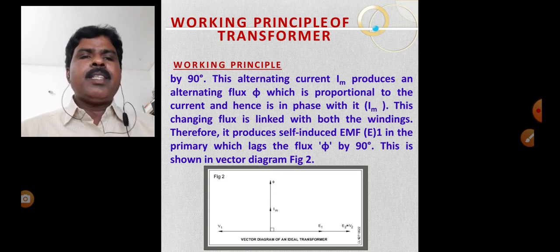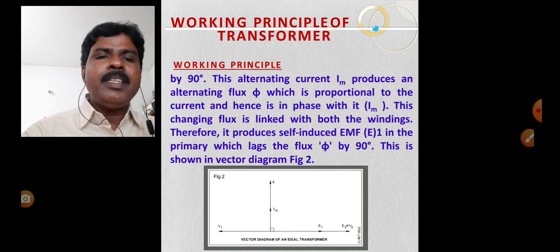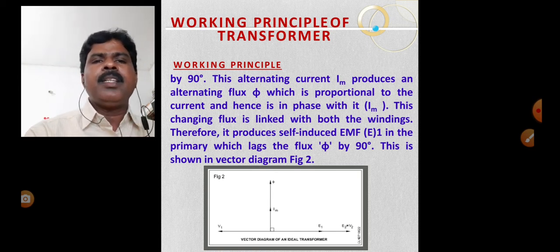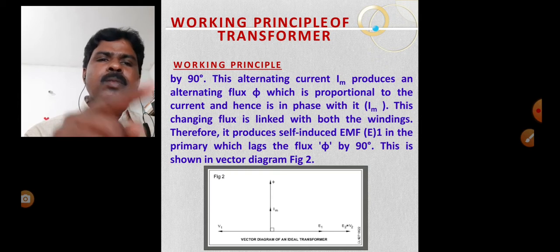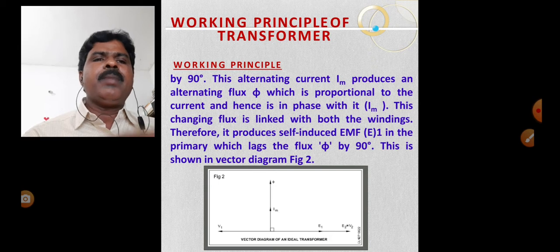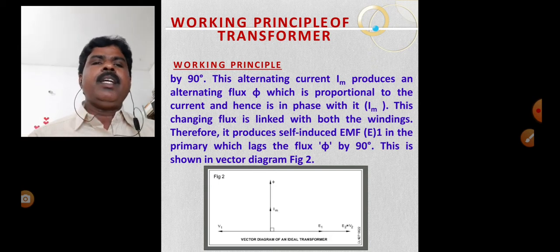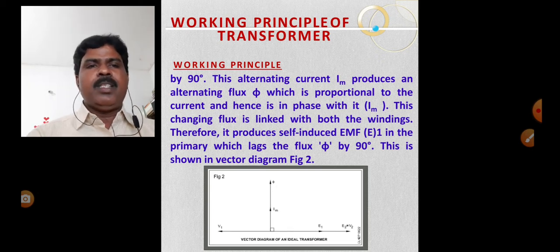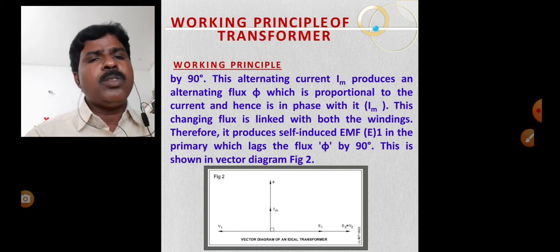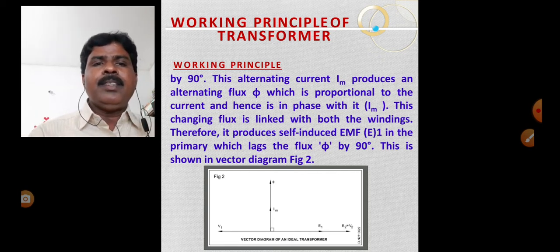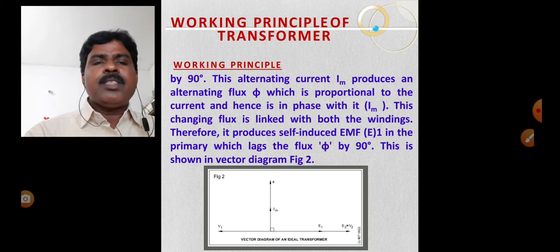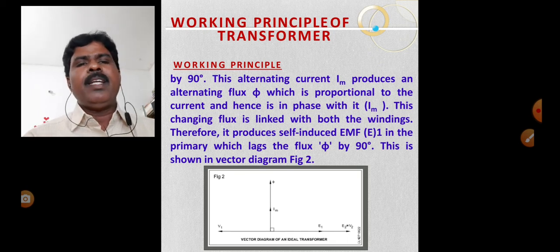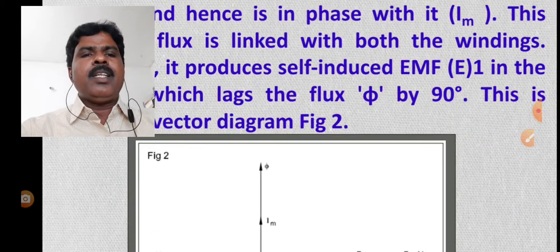This alternating magnetizing current lags V1 by 90 degrees and produces an alternating flux. The alternating flux is in phase with the magnetizing current IM — both the flux and IM are in the same phase.